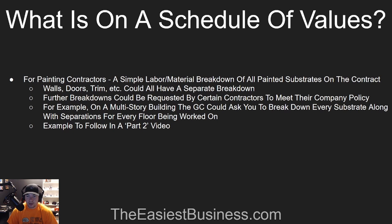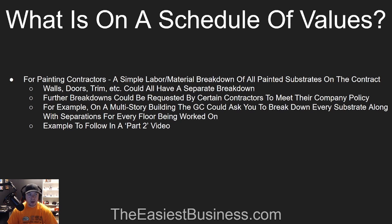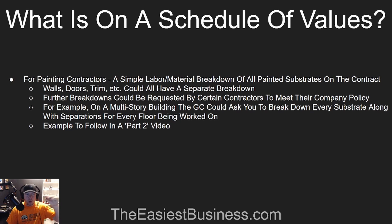So what is on a schedule of values for painting contractors, which is mainly who I deal with? It's usually just a simple breakdown of labor and material, and it deals with all painted substrates on the contract. For example, if you're painting walls, doors, and trim, you're going to have a labor and material breakdown for just walls, a labor and material breakdown for just trim, and a labor and material breakdown for just doors.